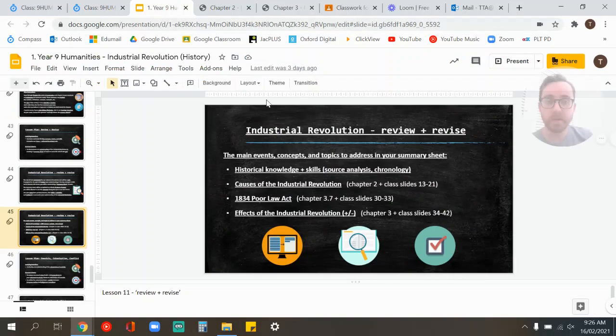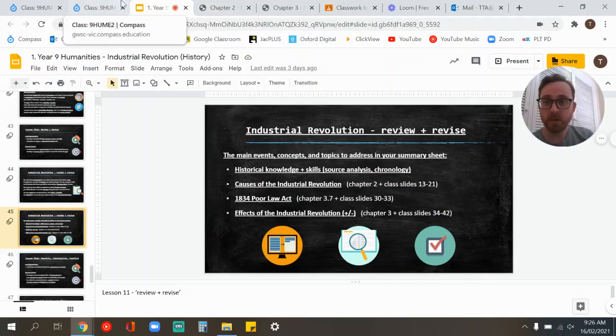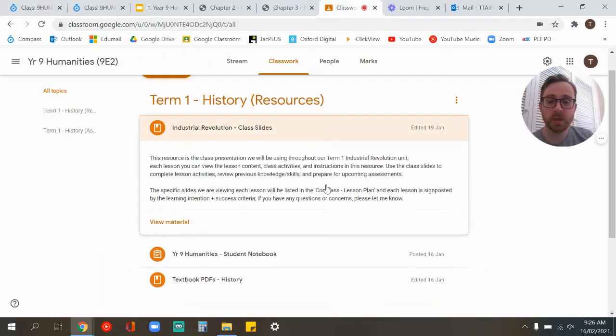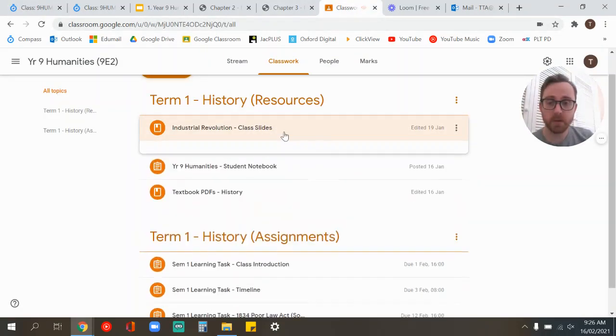And remember, if you don't have the textbook on you, the physical copy, you can go to Compass Resources, where I've put chapter 2 and chapter 3. You can also access the class slides. And Google Classroom also has everything you need.